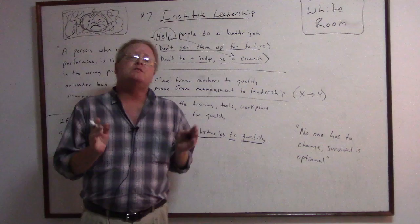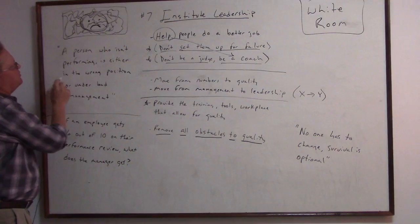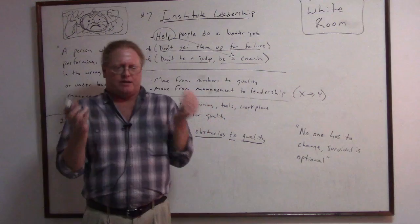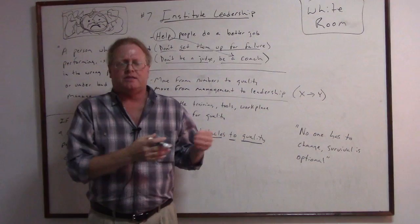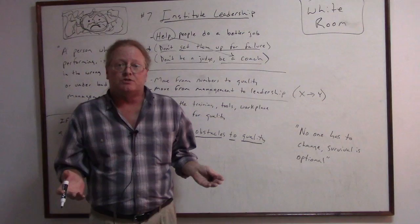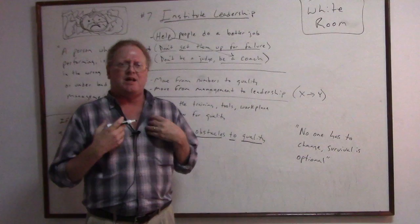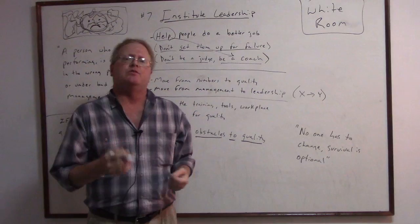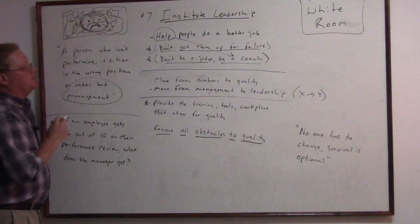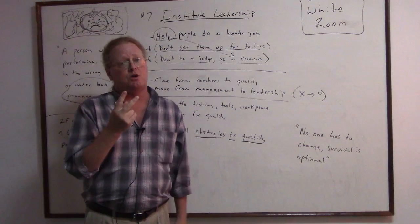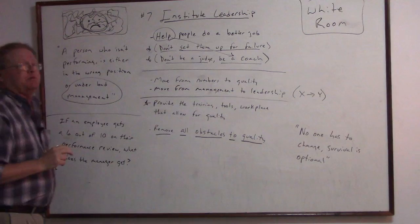Now, here again, you say, well, that's not so deep. But listen to this quote: A person who isn't performing is either in the wrong position or under bad management. Wow, that really should wake up all managers. A person who's not performing is either in the wrong position or under bad management. A person might not be talented in doing something, they might not be good at this or that, then they're in the wrong position. Maybe they're not customer focused as a personality, they're in the wrong position. Maybe they're not strong, maybe they're not good at math, they're in the wrong position. But otherwise, if they are in the right position and not performing, they are under bad management. There's only two options here.